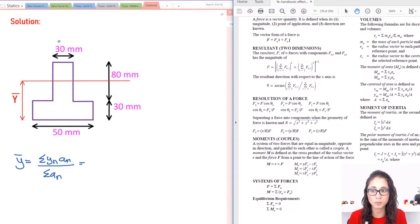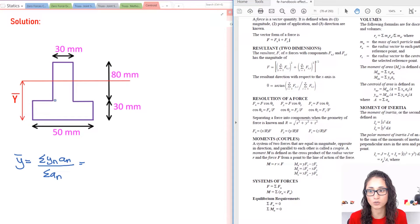So let's split this into two parts. I would like to do it this way. So this is going to be our part A and this is going to be our part 2. So let's do Yn times An of part 1. So my area, which is easy, I like to start with the area, 15 times 30.